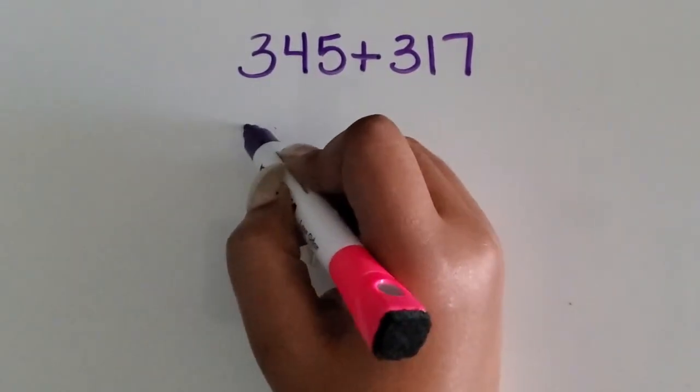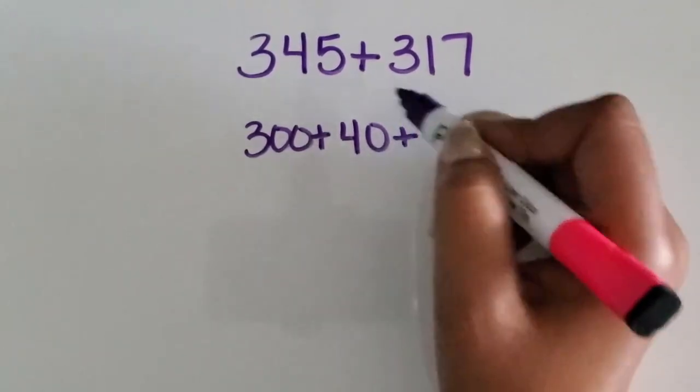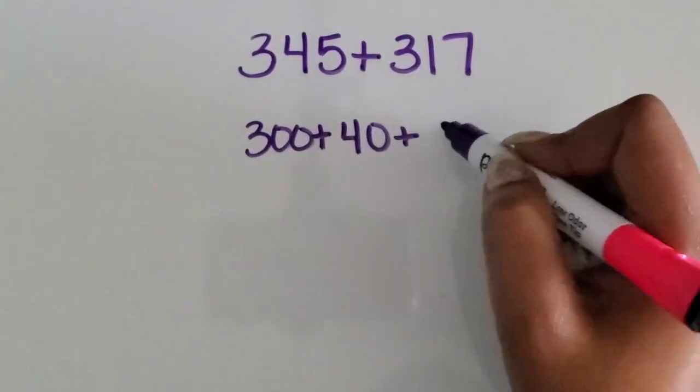So the three is in the hundreds place. The four is in the tens place. The value is 40. The five is in the ones place, so the value is five.